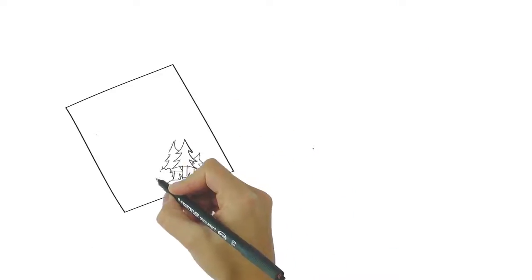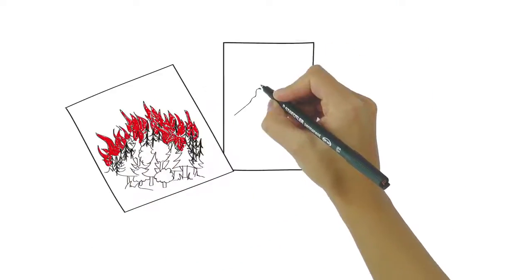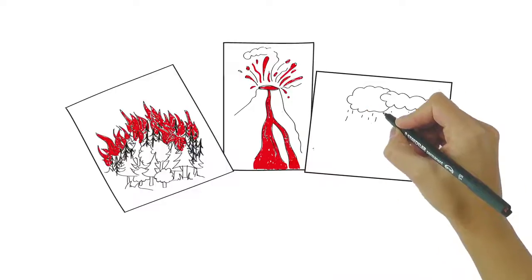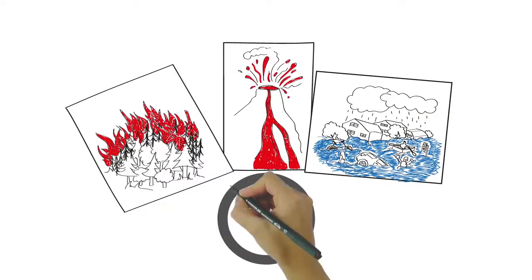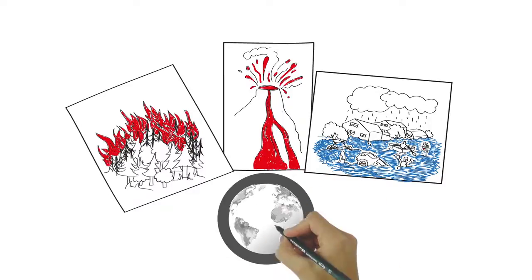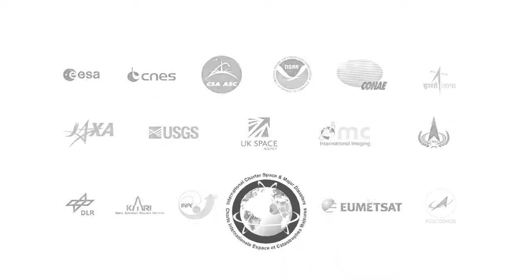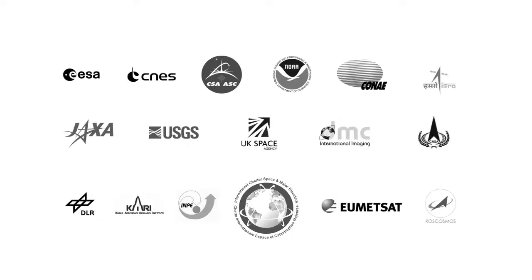We cannot prevent natural disasters from happening, but we can help to manage their consequences. Satellites provide rapid, accurate information anywhere around the world, 24 hours a day. The International Charter Space and Major Disasters is helping to save lives wherever disasters strike.